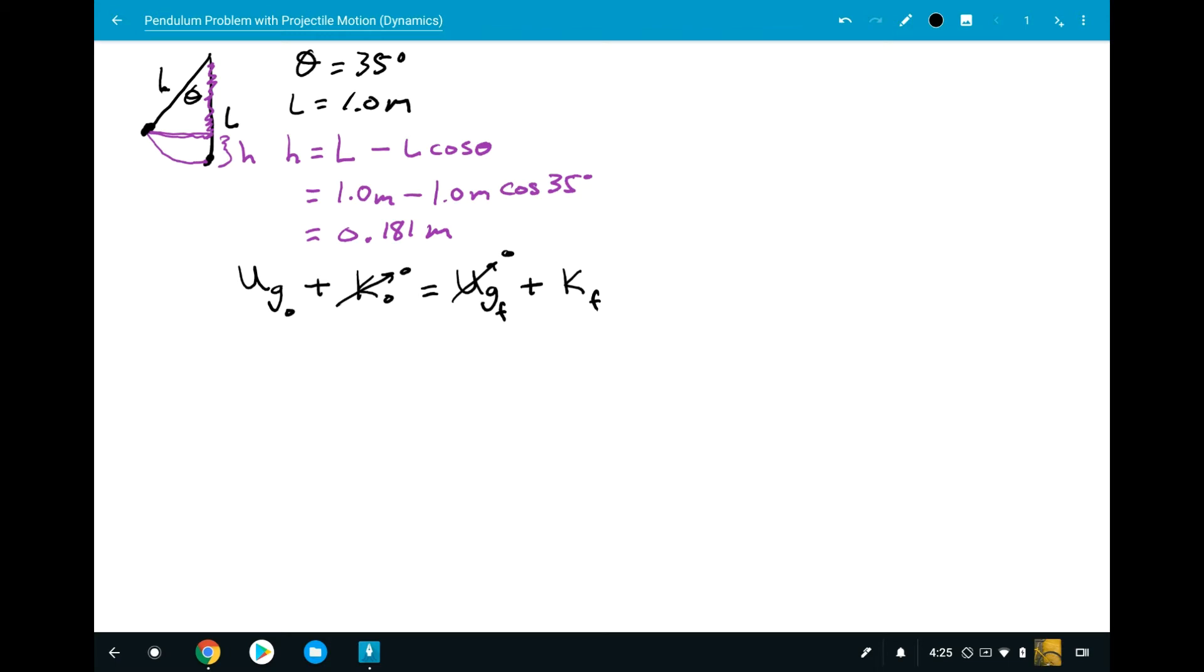So, in other words, the potential energy at the very top, mgh, is equal to one half mass times the velocity final squared, that final velocity is the velocity at the bottom. So, mass will cancel, and what we're going to have is final velocity equals square root of 2gh. Well, let's determine that velocity.